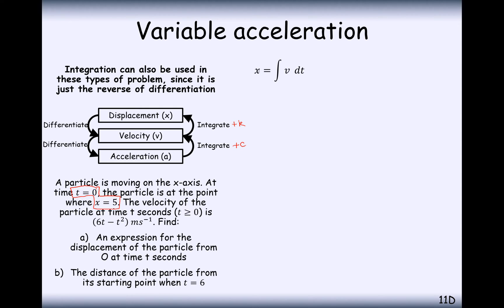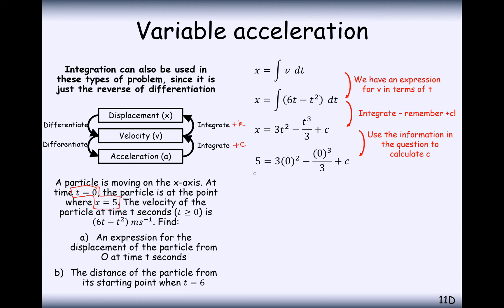What we can do here to find displacement is we integrate back from velocity. When we integrate this, we're going to get 3t squared minus t cubed over 3 plus c. Now we're going to bring in the fact that when t equals 0, x equals 5. So substitute those values in, and we eventually see that c is equal to 5.